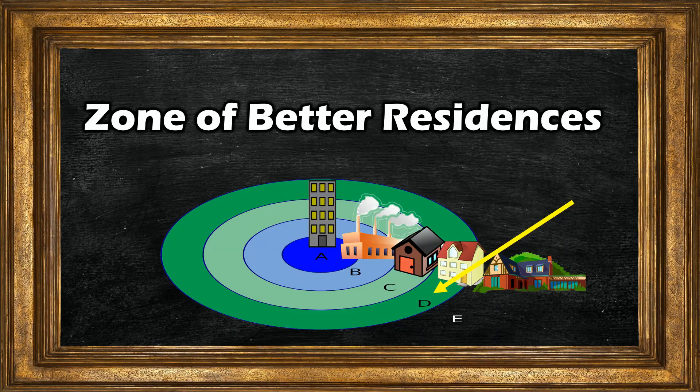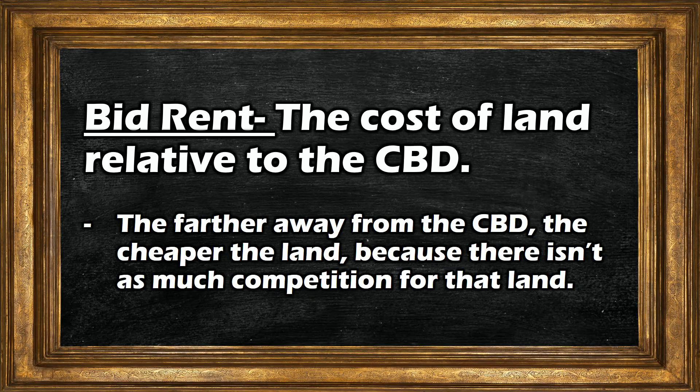The fourth ring of the Burgess concentric zone model is known as the zone of better residences. These are upper middle class houses that exist in the areas of the city known as the suburbs. The people living in this ring would be able to afford to live a little further away from the city center because they could afford the transportation, and wanted to live a little further away from the chaos and the pollution of the city. Bid rent is cheaper the further from the CBD you get, and so there is more available land that can support larger estates.